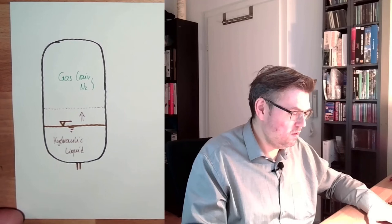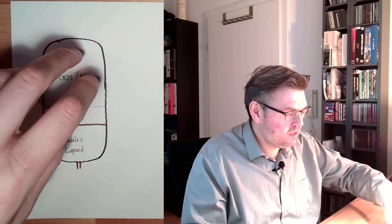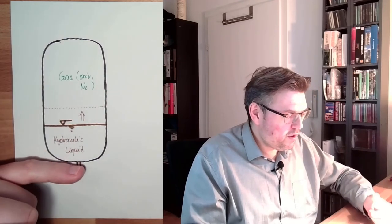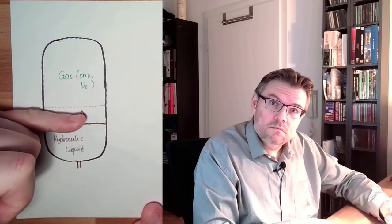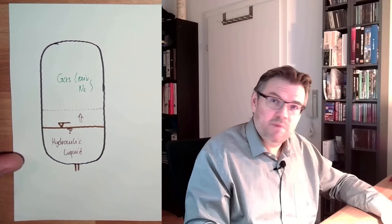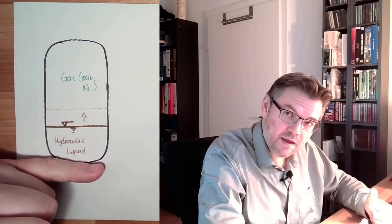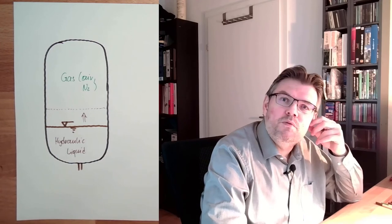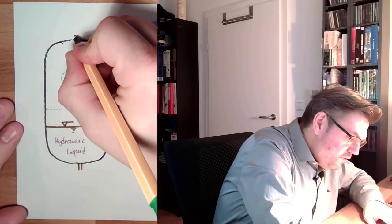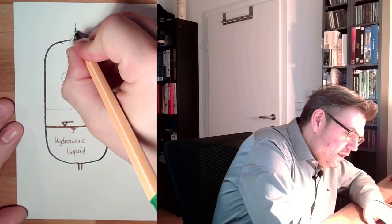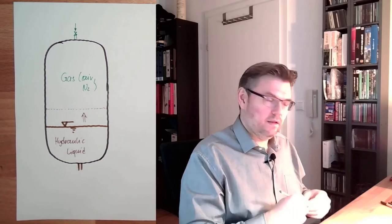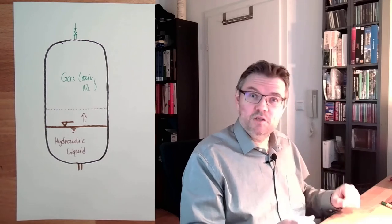And I can use this gas bladder to press out the oil again. This is how all of the pressure accumulators are working. So there's usually nitrogen, sometimes air. This gas is pressurized, and it's even more pressurized if I put in oil. So this gas is acting as a damping element also. If there are pressure peaks, this gas will damp these pressure peaks because I can simply compress it.